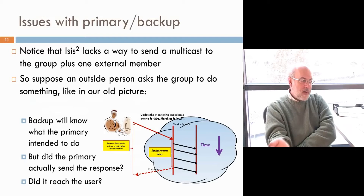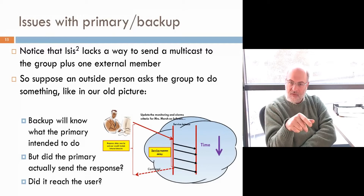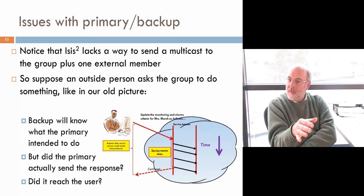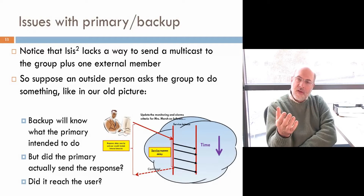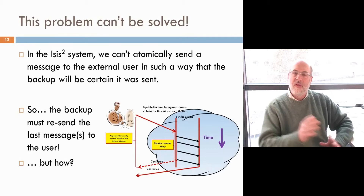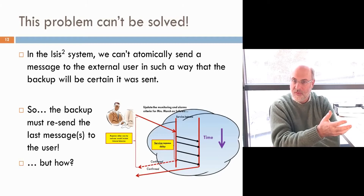The main issue with primary backup is the small window during which the leader has finished performing some kind of action, but then it crashes, and we don't really know if the backup is in the same state as the leader at that point. Typically, when the action is finished, you'll send a message to your backup, but that message sending may be exactly the point where the crash occurred. A second issue is that you might not know if the leader replied to the external client. You would hope that ISIS would have some magic wand solution to that, but the reality is it can't be done.